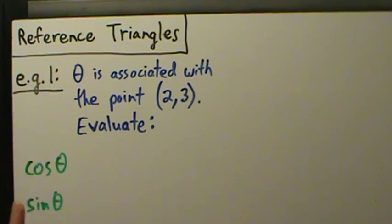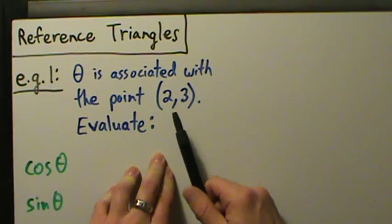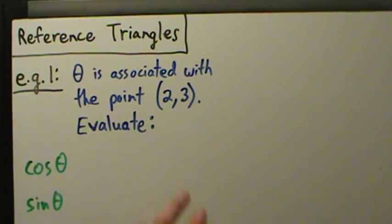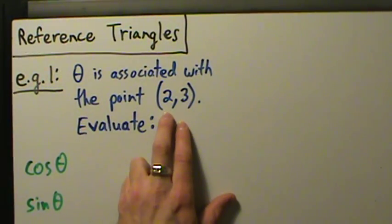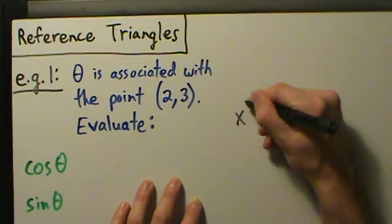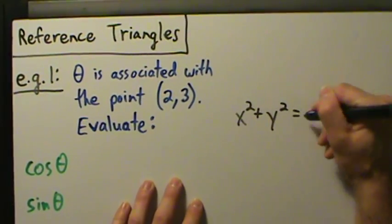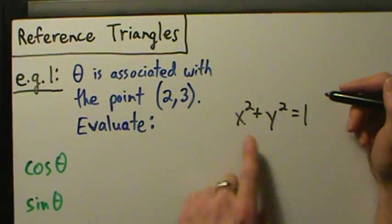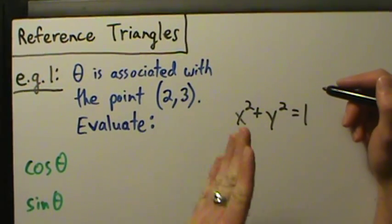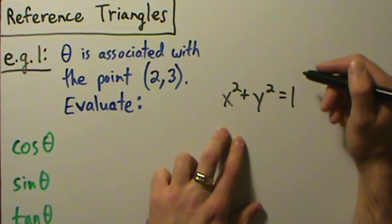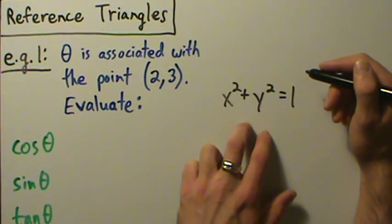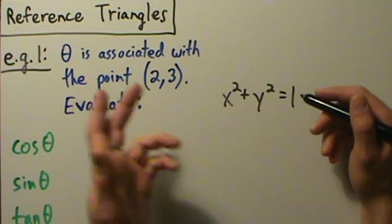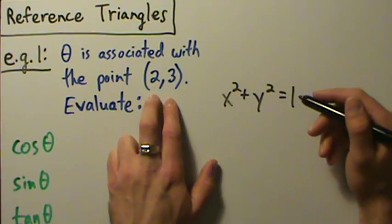We've done problems like this before, but the point we dealt with was on the unit circle. Remember, the first thing we did was verify that the point was on the unit circle — we plugged the coordinates into the equation of the unit circle. Any point on the unit circle satisfies this equation, and if a point does not satisfy it, it's not on the circle. So if we plug in these coordinates, we get 2 squared plus 3 squared.